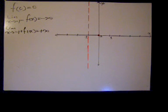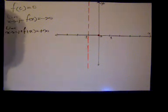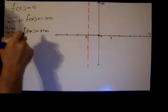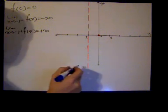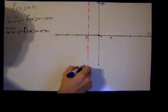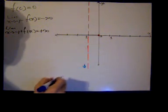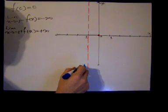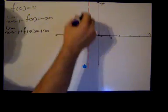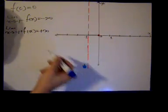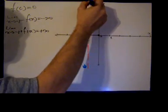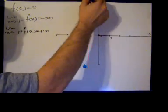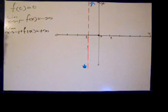We'll make the detail in blue: as f approaches negative 1 from the left, the graph is going to negative infinity, and as it approaches from the right, it's going to positive infinity.